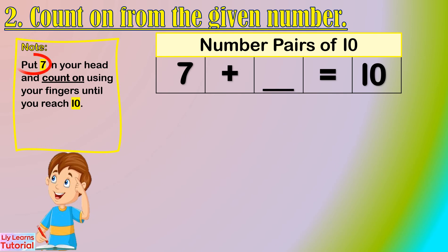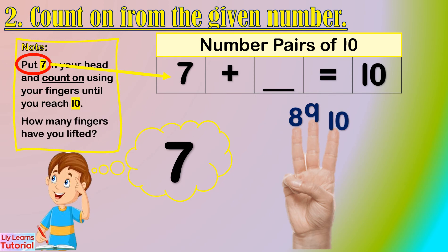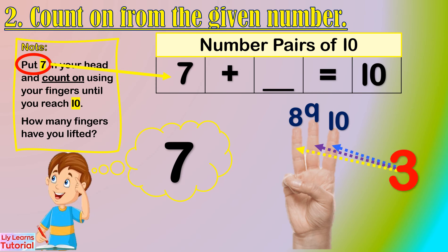Let's start from 7. Hold 7 in your head, then count on: 7, 8, 9, 10. How many fingers have you lifted? 1, 2, 3 — that's 3 fingers. So the number pair of 7 is 3.